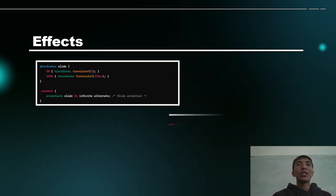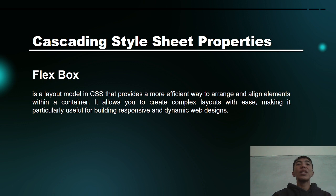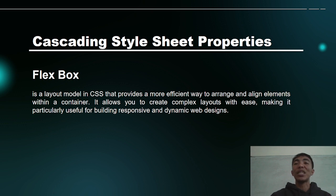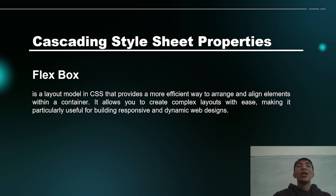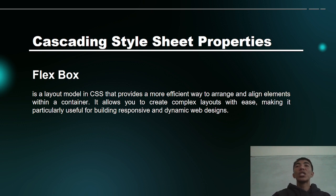Next is flexbox. It is a layout model in CSS that provides a more efficient way to arrange and align elements within a container. It allows you to create complex layouts with ease, making it particularly useful for building responsive and dynamic web designs. We use flexbox to create dynamic, responsive websites that suit the needs of our viewers.